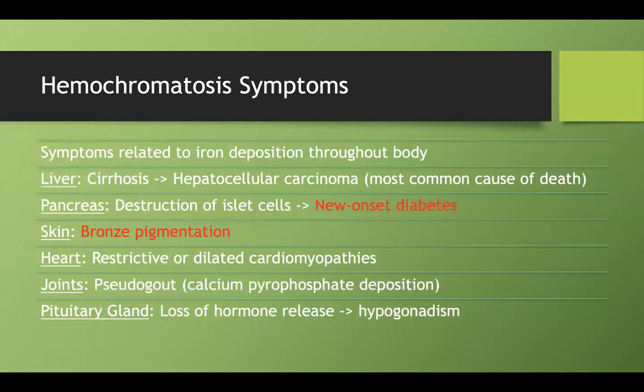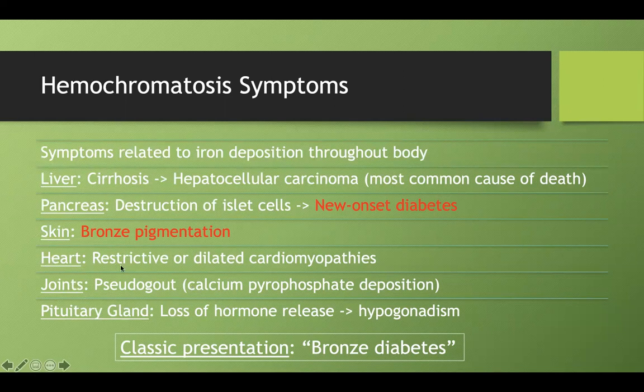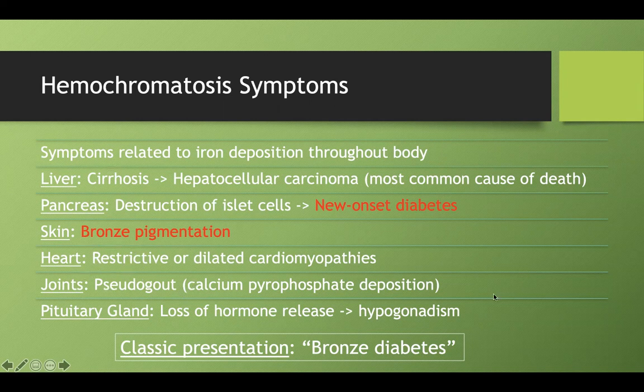I wanted to highlight this because the classic presentation you hear about in hemochromatosis is bronze diabetes, and that's because of the iron deposition in your pancreas and in your skin. But don't forget some of these other ones, especially the cirrhosis is super important. I've also seen this restrictive cardiomyopathy and the pseudogout tested quite a bit.